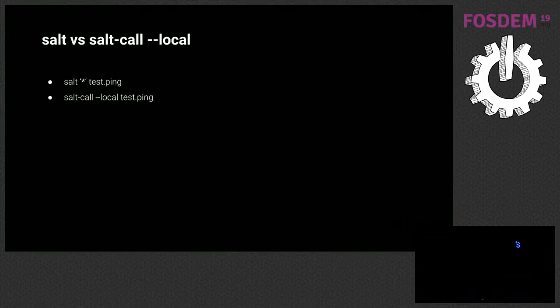Another important concept is the difference between salt and salt-call. The salt CLI tool is used on the master — for example, targeting all minions with an asterisk and running test.ping. Salt-call gives you the same power but on the minion. Specifically, salt-call --local will not try to communicate back to the master; it keeps all communications within the minion. We use this within Salt SSH because that's how we create unidirectional traffic so everything runs on the minion.